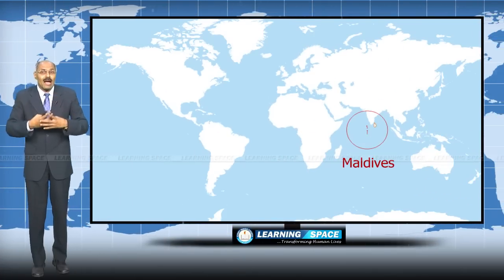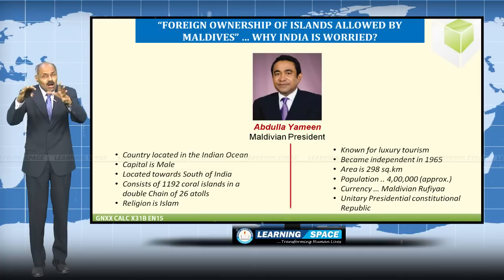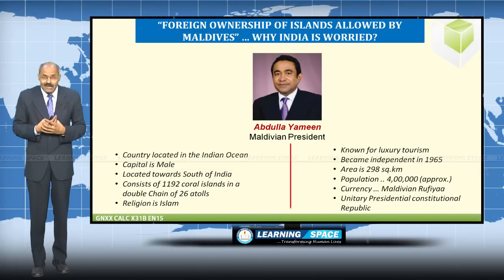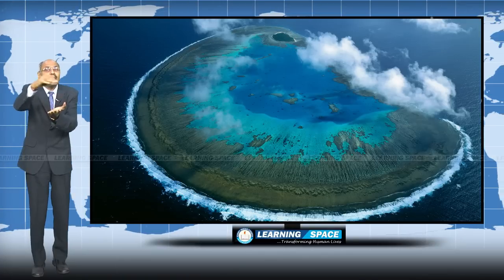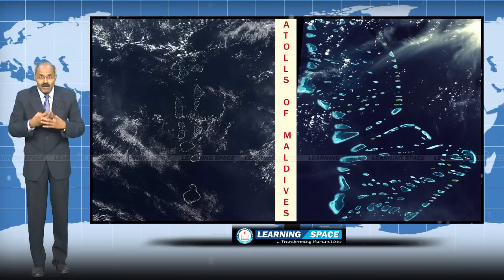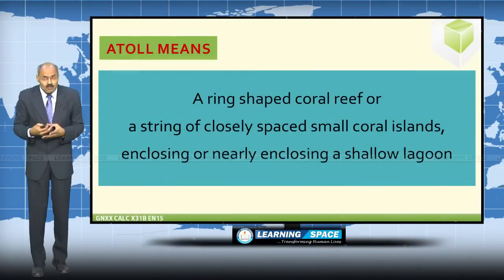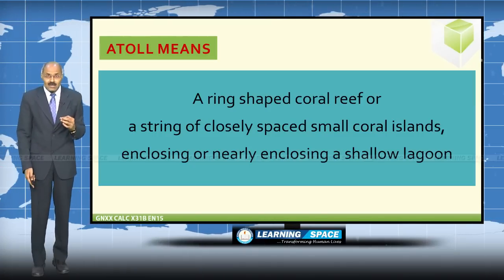This tiny country has 1,192 coral islands in the Indian Ocean, grouped into 26 atolls. Atolls are coral reefs situated in such a way that a shallow body of water is separated from a large body of water inside the ocean. The chain of 26 atolls consists of 1,192 coral islands. Please look at this picture — it clearly shows coral islands where shallow water is separated from large water bodies.